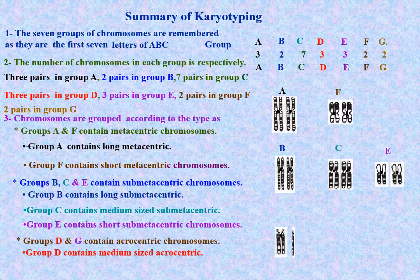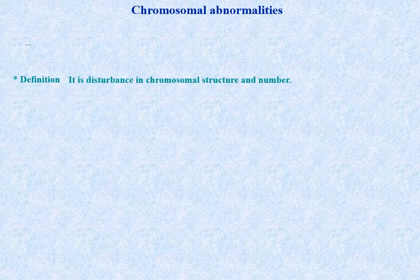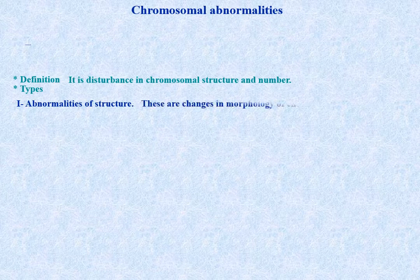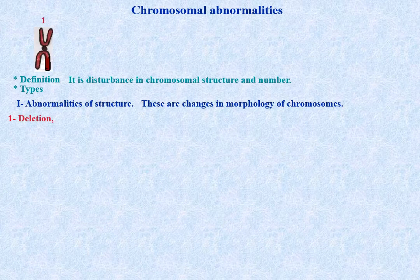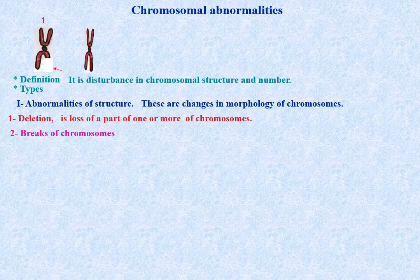Chromosomal abnormalities - definition: it is the disturbance in chromosomal structure and number. Types - abnormalities of structure: these are changes in the morphology of chromosomes. Deletion is the loss or detachment of a part of one or more chromosomes. Breaks of chromosomes are very common as chromatid ends are sticky due to electrochemical forces.